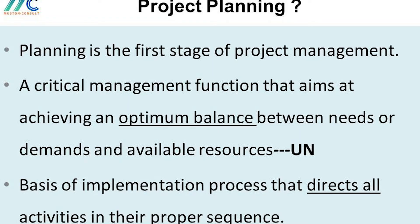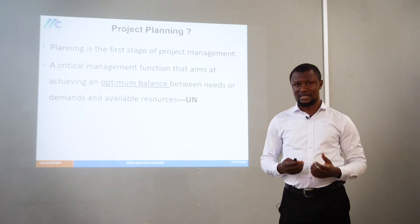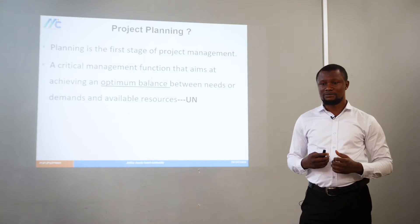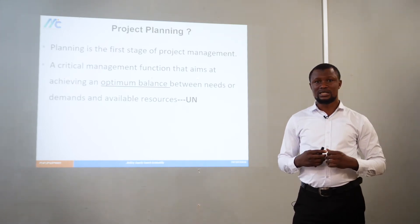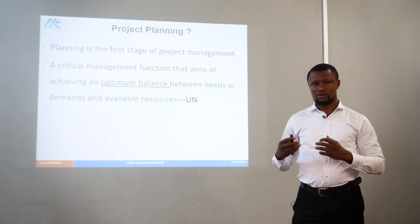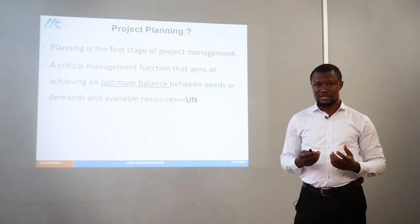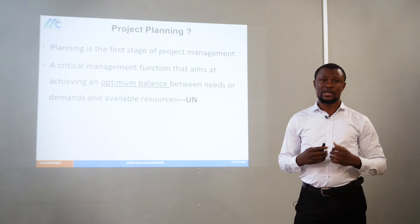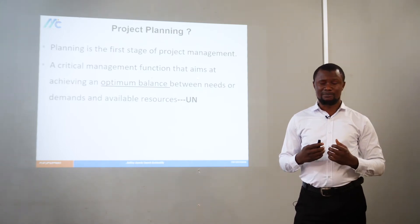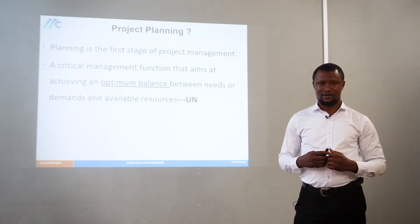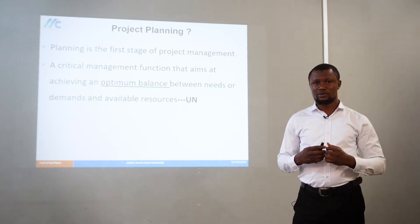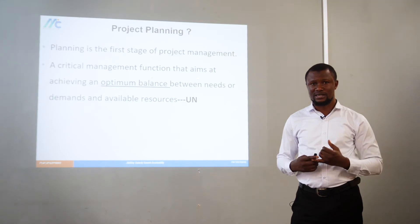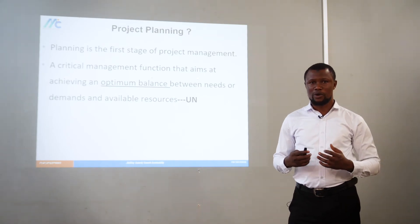Let's start with planning. According to the United Nations, planning is the first stage of project management. It is a critical management function that aims at balancing the difference between the needs and the available resources. For every project, there's usually a need or a gap that the project has come to address. Balancing the distance between this need and the limited available resources — in terms of human and financial resources — is what we call planning.